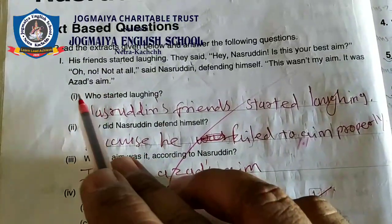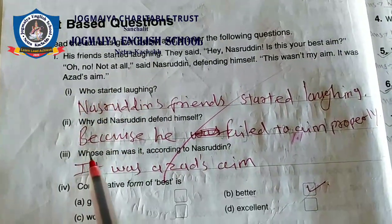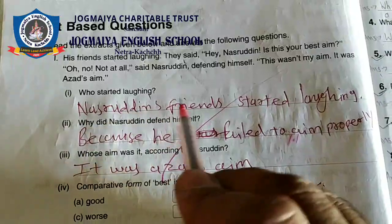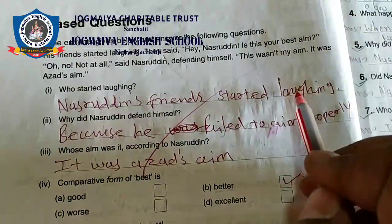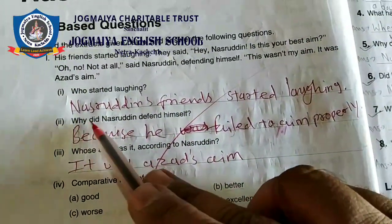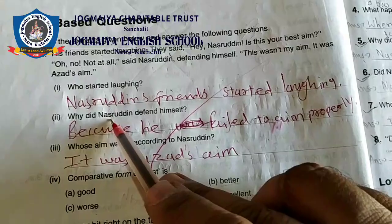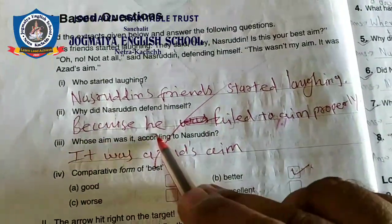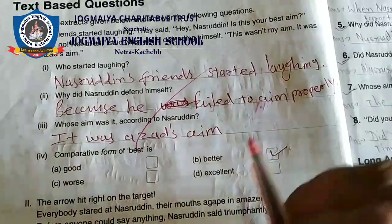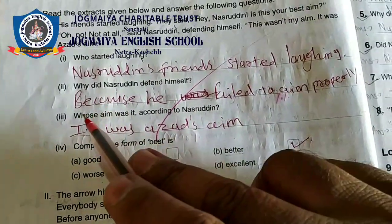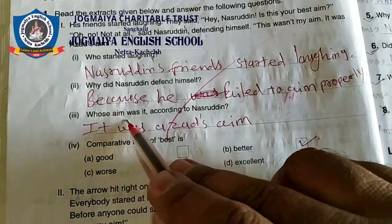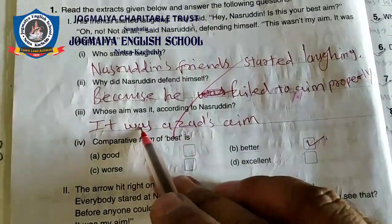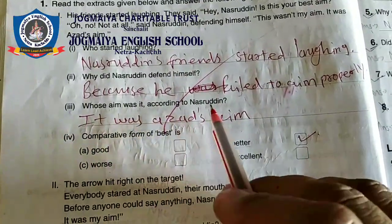Question 1: Who started laughing? Answer: Nasruddin's friends started laughing. Why did Nasruddin defend himself? Because he failed to aim properly. Question 2: Whose aim was it according to Nasruddin? It was Azad's aim.